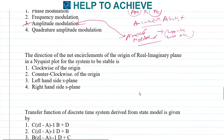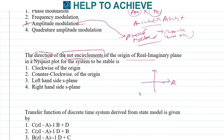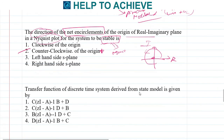Next: regarding the direction of net encirclements of the origin in a Nyquist plot on the real-imaginary plane — for a system to be stable, the Nyquist criterion states that the origin must be encircled in the counterclockwise direction a specific number of times. The correct answer is counterclockwise encirclement of the origin.